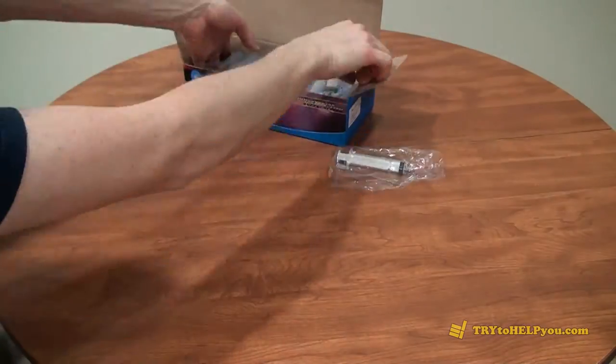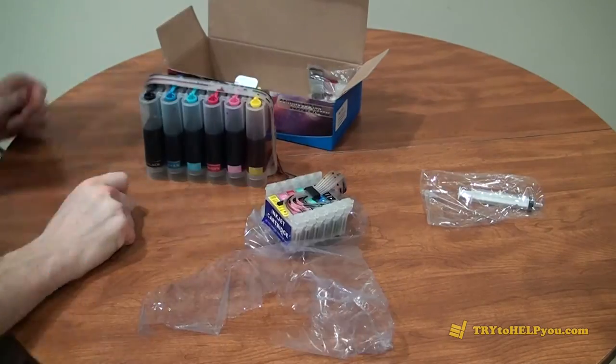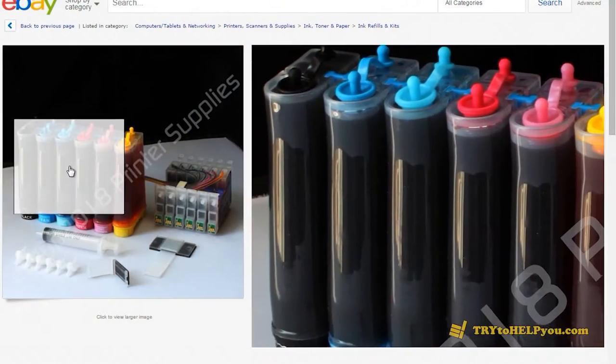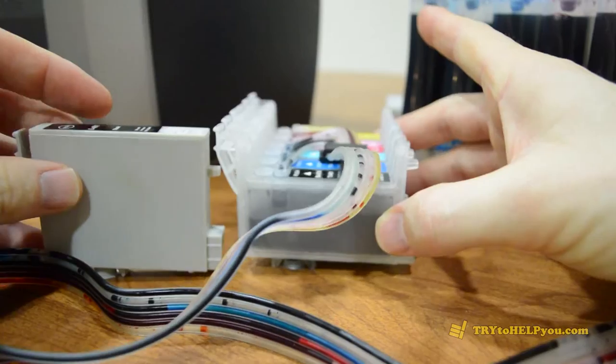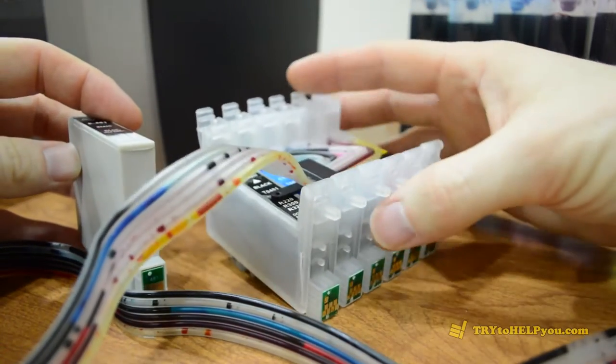Let's take a look at this kit really quick. This particular kit comes from eBay, as you can see here. It comes with the ink reservoirs already full, tubing,